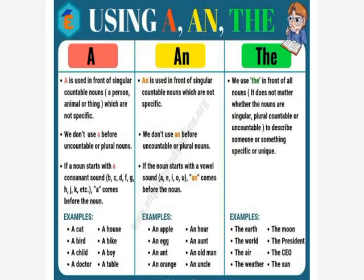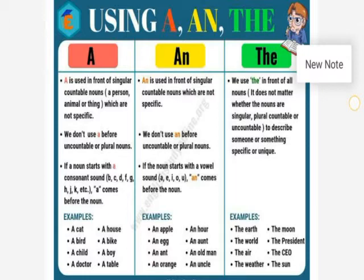Now let's see the usage of articles. A is used in front of singular countable nouns. We don't use a before uncountable or plural nouns, which means we use a only for the singular noun, not for more than one. For example: a cat, a bird, a child, a doctor, a house, a bike, a boy, a table. A denotes singular, which means a denotes one.